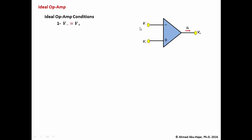This condition holds because the ideal op-amp has infinite gain. If one input were at three volts and the other at negative two volts, the output voltage would be saturated. So when applying the ideal op-amp model, we must either state that v minus equals v plus, or state that the output is saturated. The second condition deals with current.